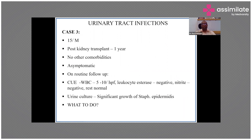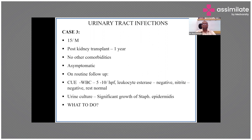Case 3: a 15-year-old male who had a kidney transplant one year ago, otherwise no comorbidities, asymptomatic, on routine follow-up. Urine showed a small amount of WBCs (5–10), leukocyte esterase negative, nitrite negative — everything normal — but urine culture grew Staph epidermidis. Despite no symptoms, this post-transplant patient should be treated, because asymptomatic bacteriuria in transplant recipients, if untreated, can lead to infection of the transplant kidney and graft dysfunction.